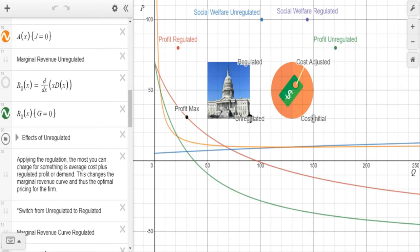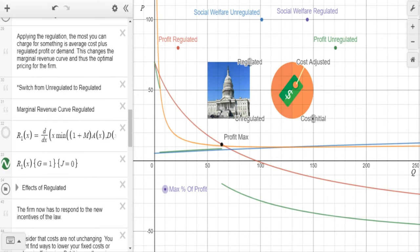Let's go to the government and switch on the regulation and see what happens to the market. As you can see, applying the regulation, the most you can charge for something is the average cost plus the regulated profit, or the demand or people's willingness to pay. This changes the marginal revenue curve and thus the optimal pricing for the firm. When average cost plus the legally allowed profit is below the demand curve, it brings your marginal revenue curve down closer to your marginal cost curve. And so it has brought our max profit point down closer to a competitive price point, and it's still given the company a decent amount of profit.